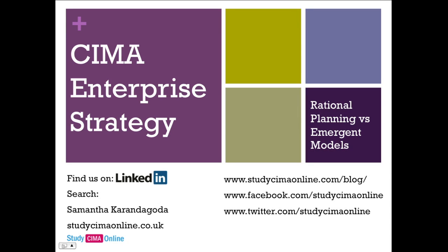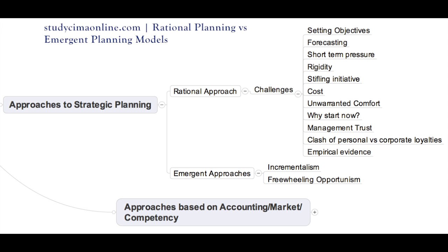Welcome to the third segment of the video tutorial series on Strategy Formulation brought to you by StudySimaOnline.com. In this tutorial, we will discuss the alternative approaches followed in strategic planning. We can broadly identify two alternative approaches: one is the rational planning model, also called deliberate strategies, and the other is the emergent approach.